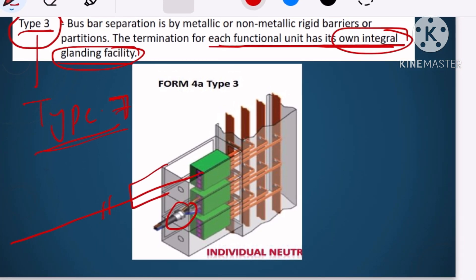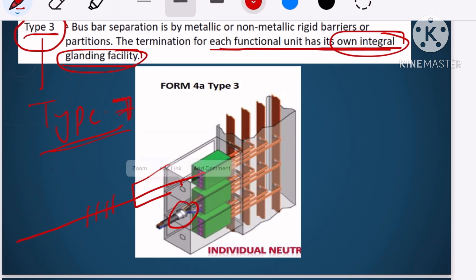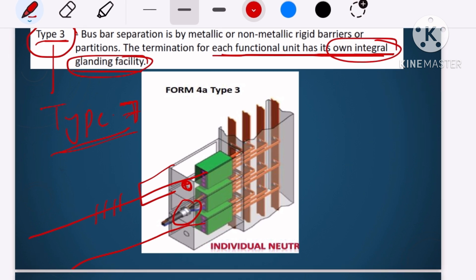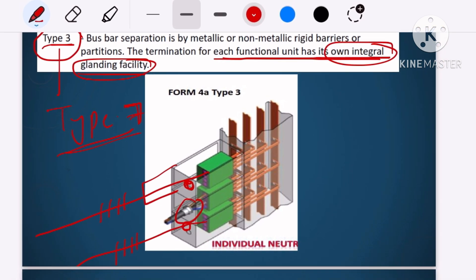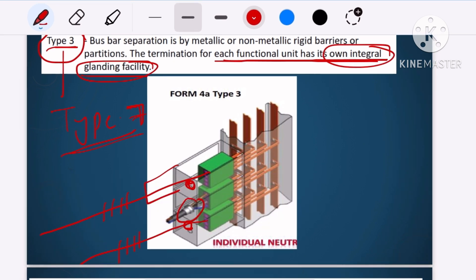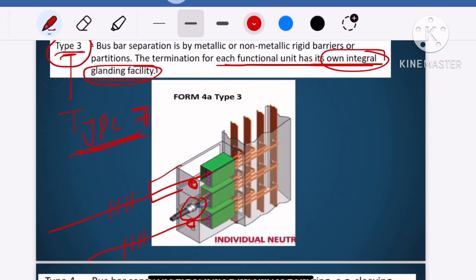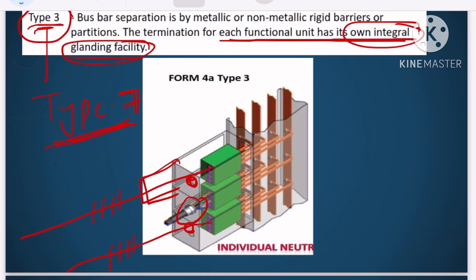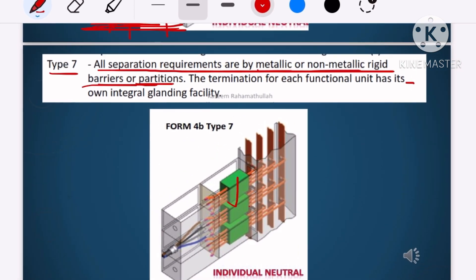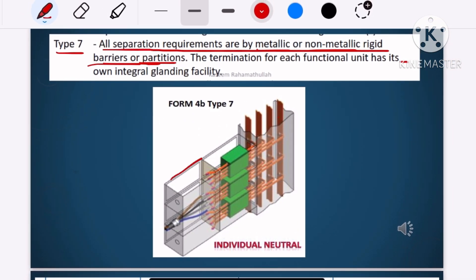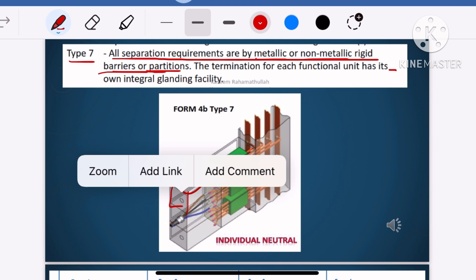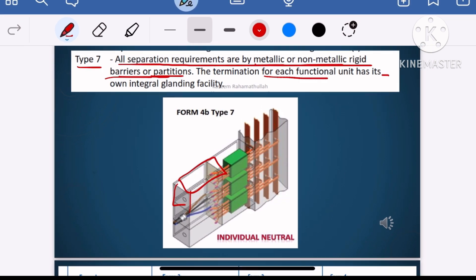In type 7, the external cable — R, Y, B, and neutral — will come, but the glanding of the cable will be at the functional unit itself, not at a common glanding plate. The difference between type 7 and type 3 is that in type 3 there is no separate compartment for termination, whereas in type 7 there is a separate compartment for termination. But like type 3, type 7 has a glanding facility near each functional unit.